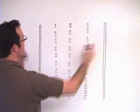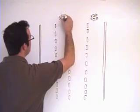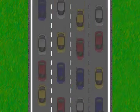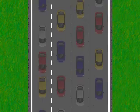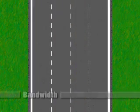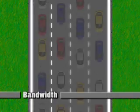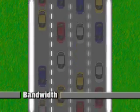Here you see a busy highway. In optimum conditions, cars can use all the lanes and move along at full speed. In this case, the highway represents bandwidth, showing how fast the cars can potentially move along.